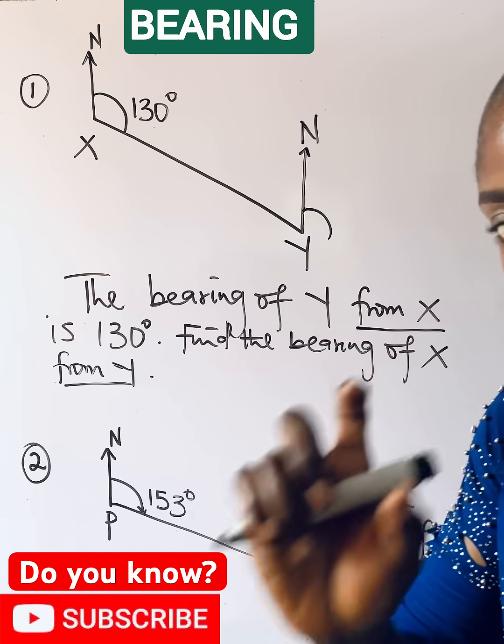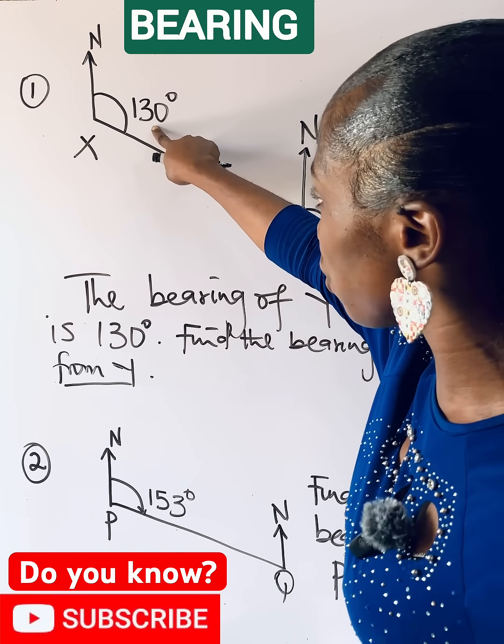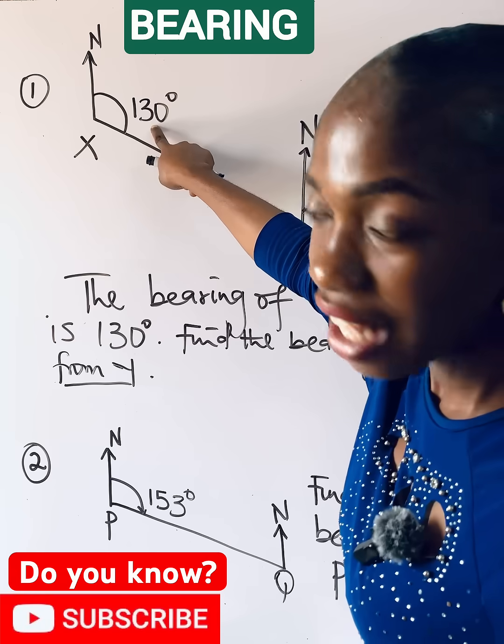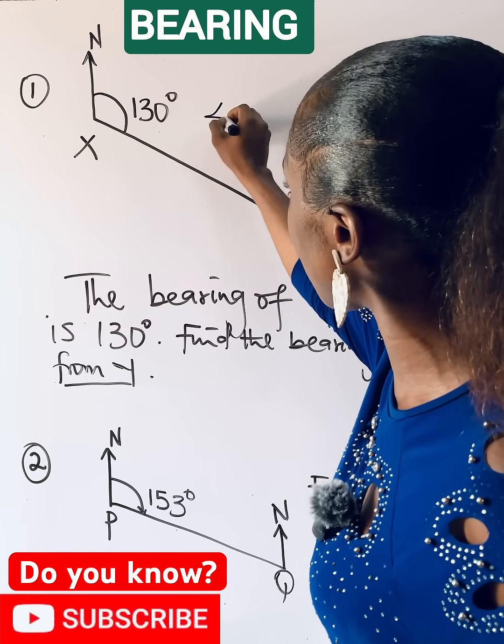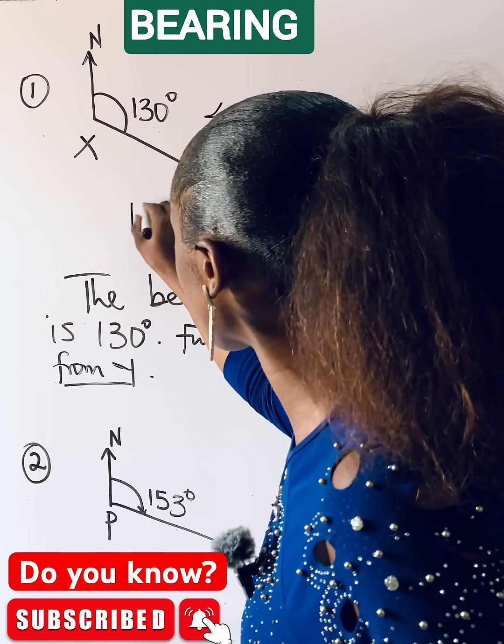Now we call this kind of bearing reversed bearing. And what is the trick? Go to the angle given, you see we have 130. Now each time the angle is less than 180 degrees, what do you do? Just quickly add 180 to that angle you are given.